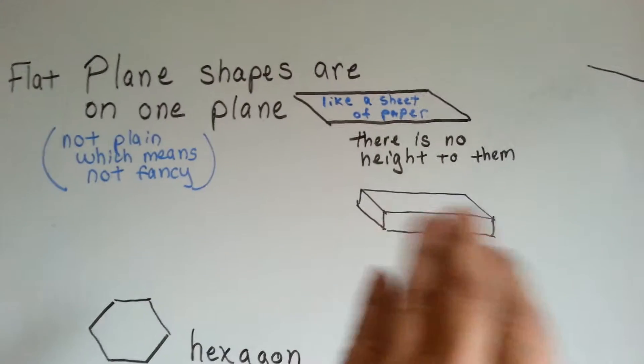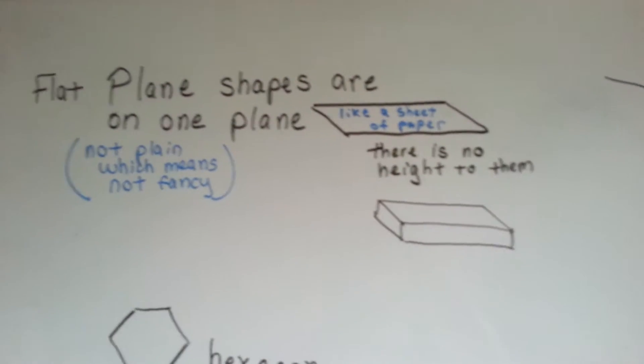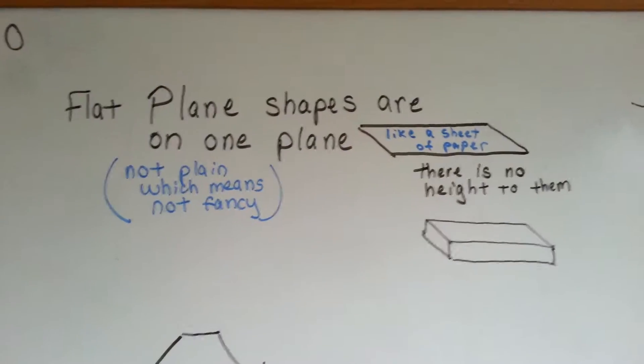A 3D object is on another plane because it has height to it. So we're going to be talking about flat plane shapes.